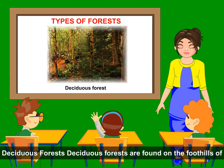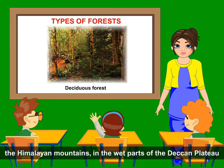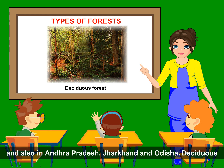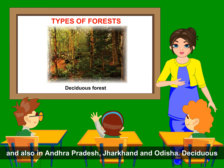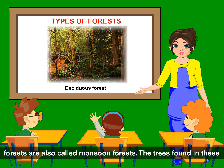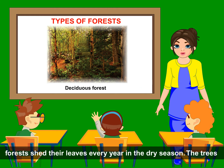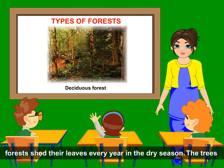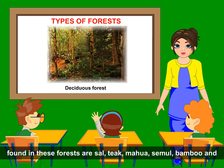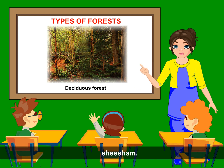Deciduous Forests. Deciduous forests are found on the foothills of the Himalayan mountains, in the wet parts of the Deccan Plateau and also in Andhra Pradesh, Jharkhand and Odisha. Deciduous forests are also called monsoon forests. The trees found in these forests shed their leaves every year in the dry season. The trees found in these forests are sal, teak, mahua, semal, bamboo and shisham.